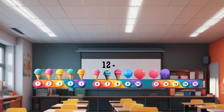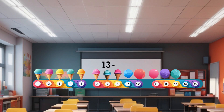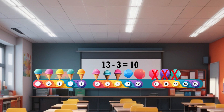Twelve minus three equals nine. Thirteen minus three equals ten.